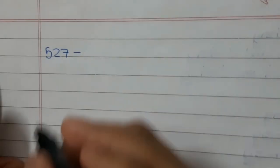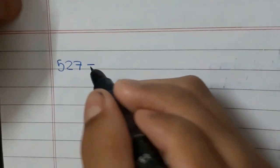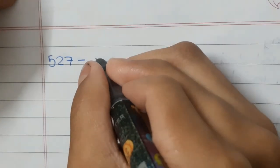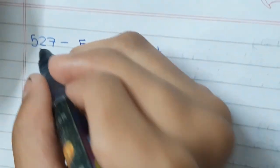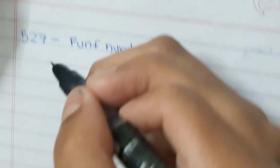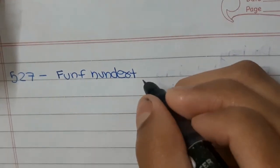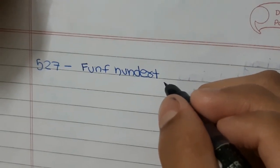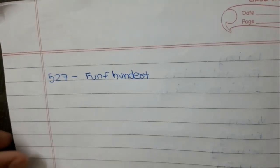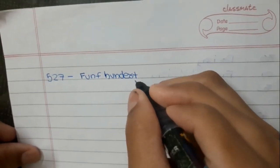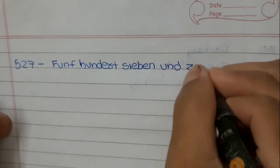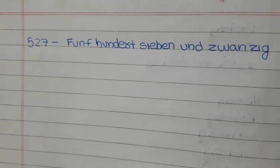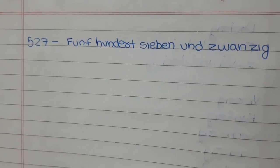Our first example is 527. What do we write for 27 in German? 7 und 6. So 527 is fünfhundertsiebenundzwanzig.